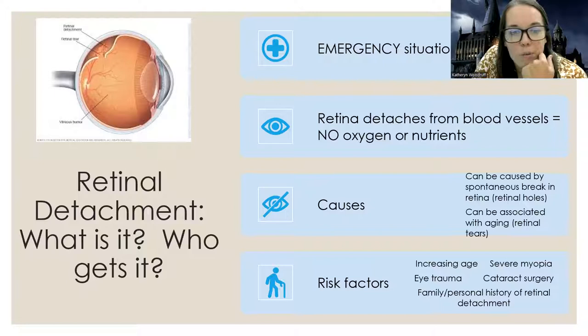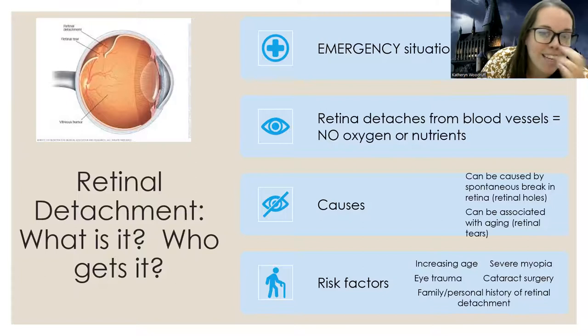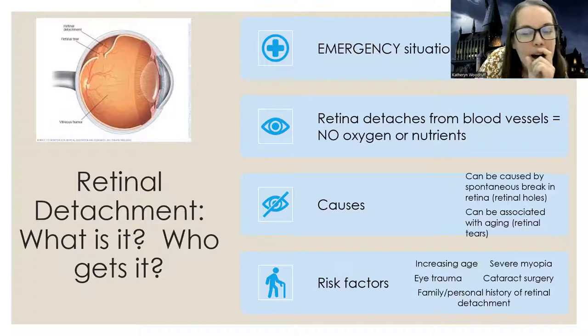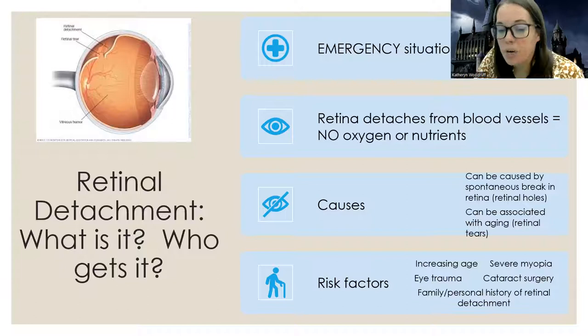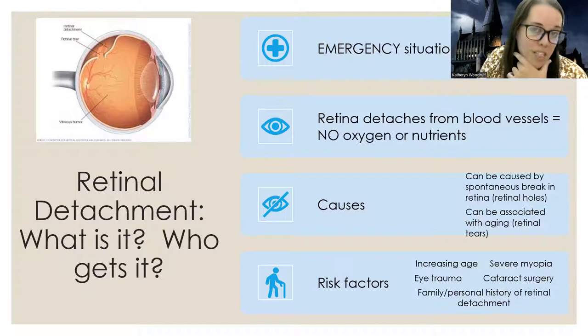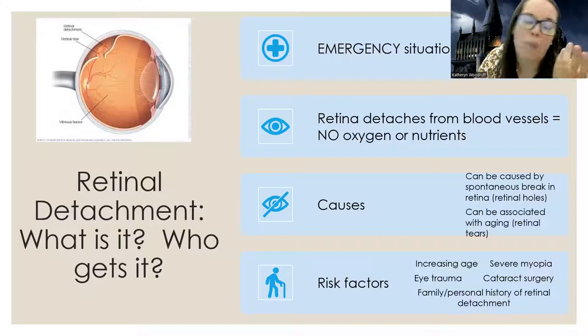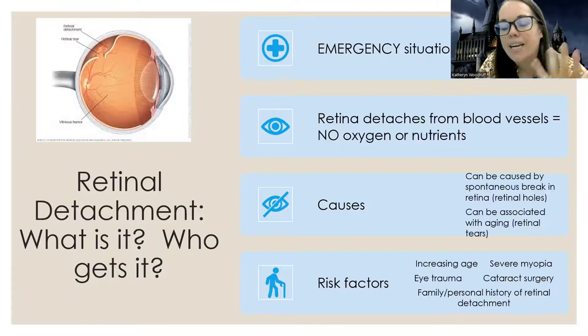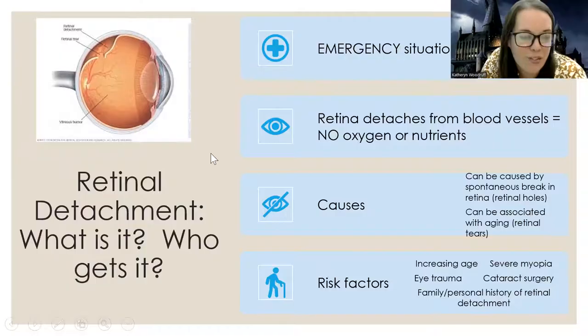Retinal detachment can happen spontaneously — you can get holes in your retina and they can end up with a tear. Most people find this terrifying, but believe it or not, it's not actually painful. It can also be associated with aging. Risk factors include severe myopia, any sort of eye trauma, having cataract surgery (manipulation of the eye puts you at more risk), and having a family or personal history. If I had a retinal detachment in my left eye, I'd need to be taught the signs for my right eye too, because once you have it you're at higher chance of getting it again.